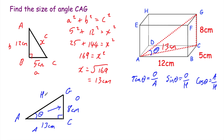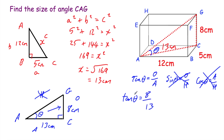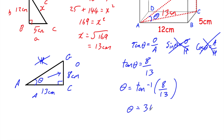We're using the opposite (8 centimetres) and the adjacent (13 centimetres), but not the hypotenuse AG, so we cross off any trig ratio using the hypotenuse and we're left with tan. So tan θ equals opposite divided by adjacent: tan θ equals 8 divided by 13. Therefore θ equals inverse tan of 8/13, giving θ equal to 31.6075...°, so the angle CAG is equal to 31.6 degrees to one decimal place.